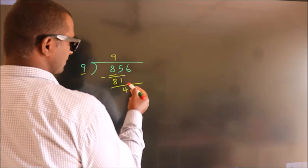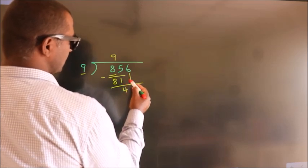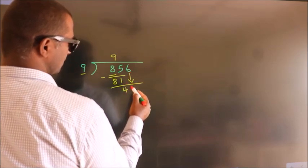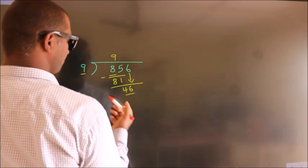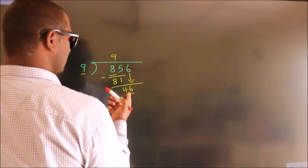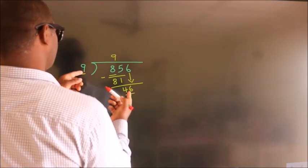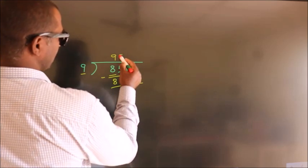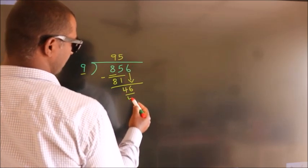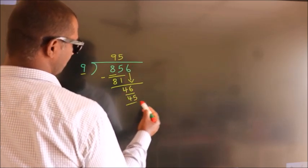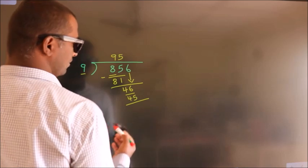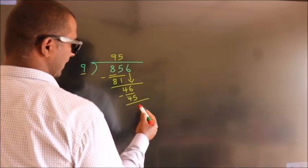After this, bring down the beside number. So 6 down. So 46. A number close to 46 in the 9 table is 9 times 5 equals 45. Now we subtract. We get 1.